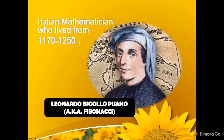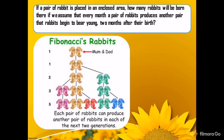The Fibonacci sequence was discovered by Leonardo Bigollo Pisano, an Italian mathematician. Fibonacci discovered the sequence by posing the following question: if a pair of rabbits is placed in an enclosed area, how many rabbits will be born there, if we assume that every month a pair of rabbits produces another pair?